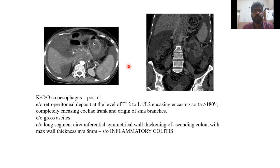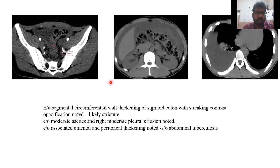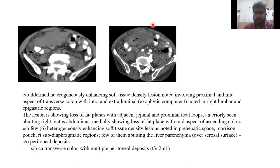In another case, we see multiple retroperitoneal deposits encasing the aorta and SMA with gross ascites and a long-segment circumferential thickening of the ascending colon with maximum wall thickness of 8 mm, consistent with inflammatory colitis. Another case shows sigmoid colon stricture: segmental circumferential wall thickening of the sigmoid colon with moderate ascites and omental thickening, consistent with abdominal tuberculosis with stricture. Another case of carcinoma transverse colon shows asymmetric circumferential thickening of the transverse colon with an extramural component, loss of fat planes, and adjacent small bowel loops, along with multiple omental and peritoneal deposits — staged as T4N2M1.